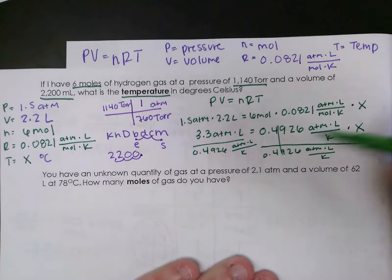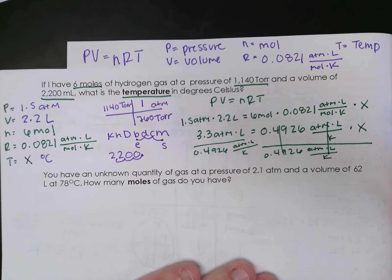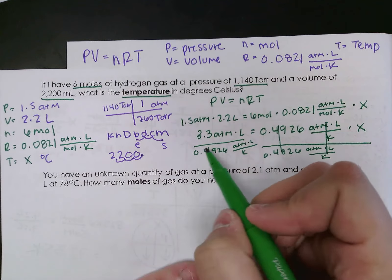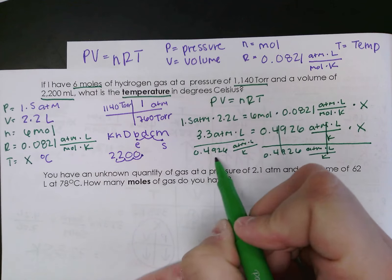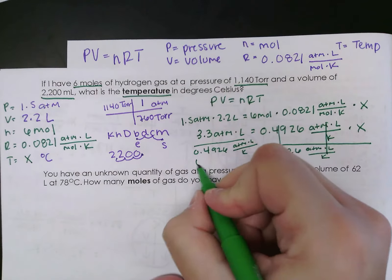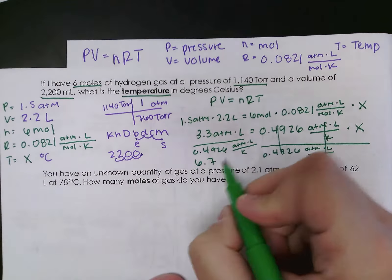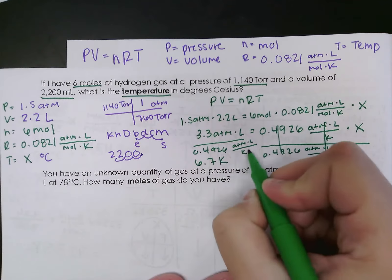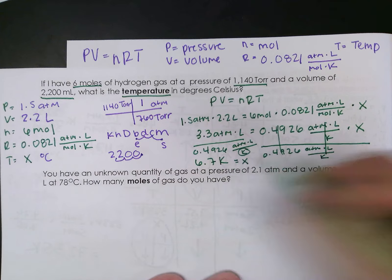When I do that, this cancels out. All of my units cancel. So I'm going to look at 3.3 divided by 0.4926. That gets me 6.7. This will be Kelvin, because I'm solving for Kelvin, is equal to my X.